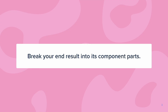Once you have that end result at the very top, we're going to take that end result and break it into its component parts. What does that mean? Let's say I'm building a course about knife skills. The end result is I want somebody to be able to pick up a knife in the kitchen and cut with confidence.